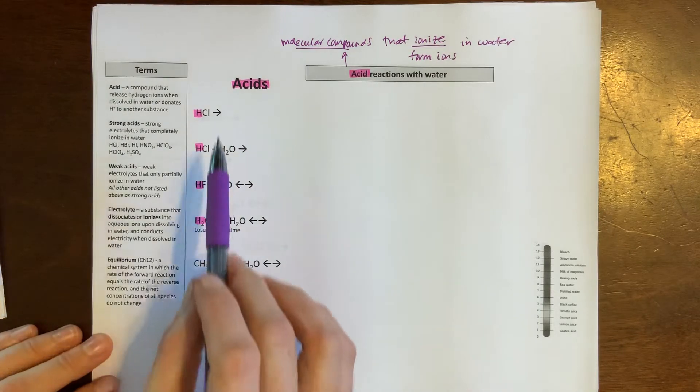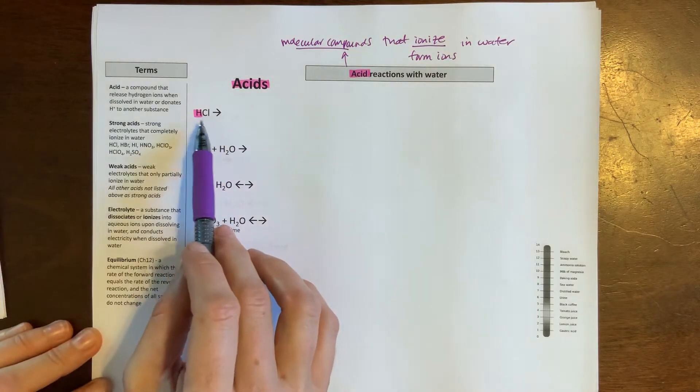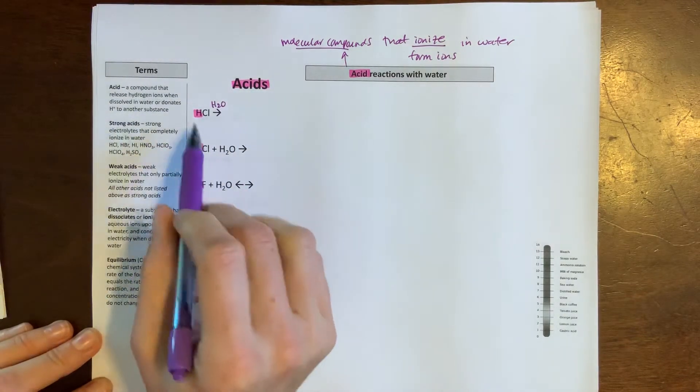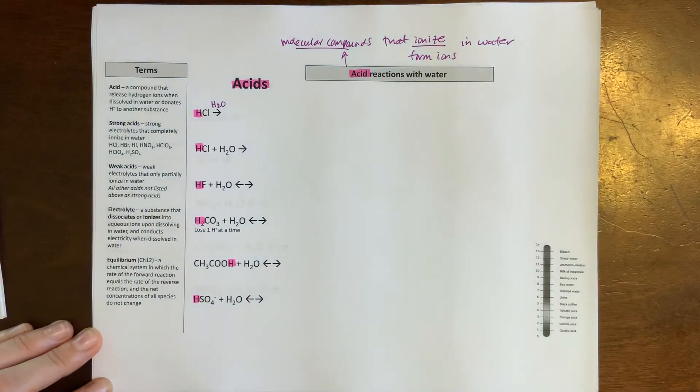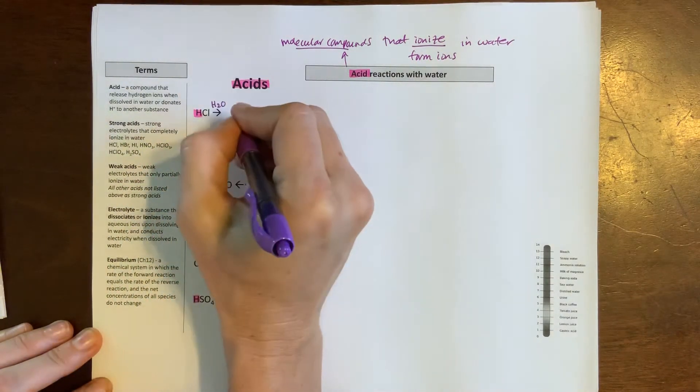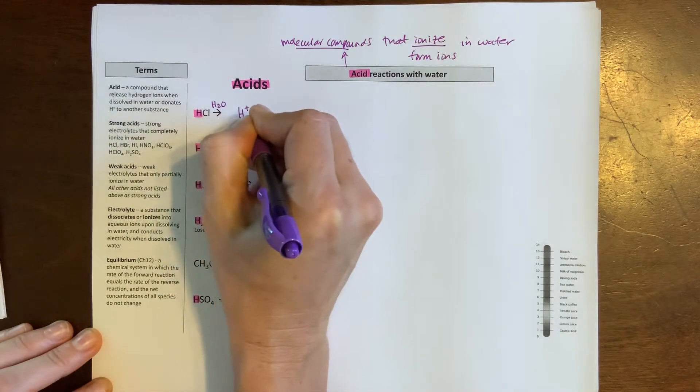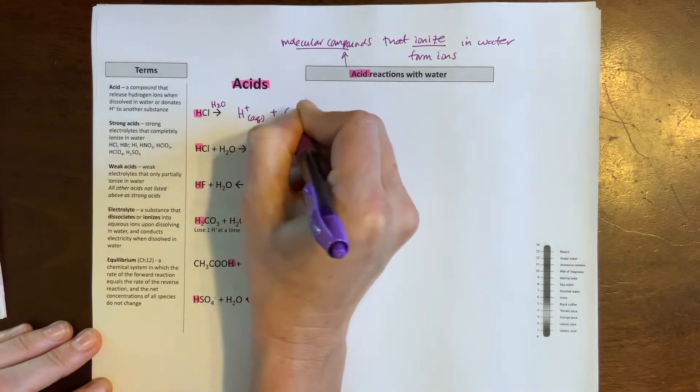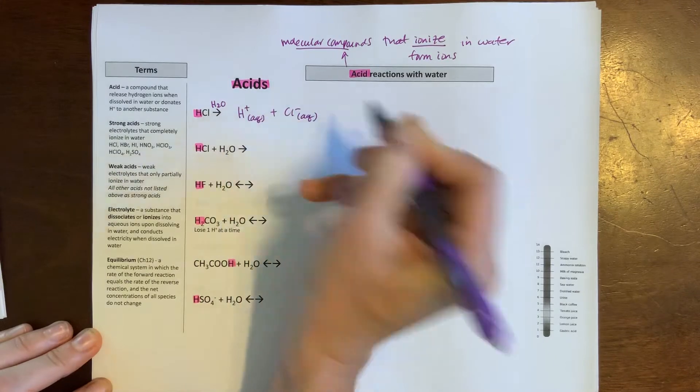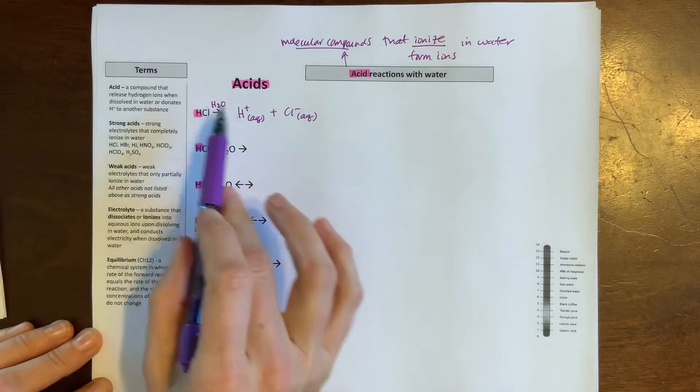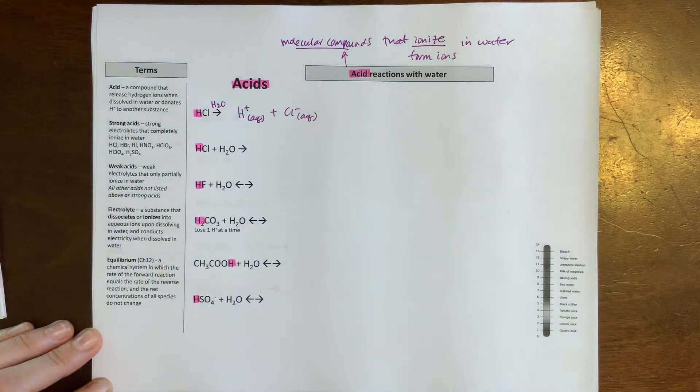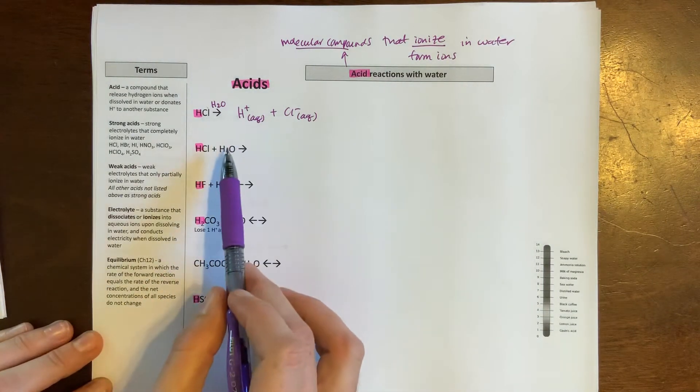Here is the first one: HCl. I'm going to add over the arrow some water to say that I drop this into water or bubble it into water since it's a gas. What I get is H+ aqueous and Cl- aqueous. So what was a molecule has now ionized or broken apart into ions.